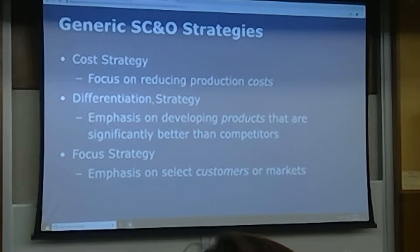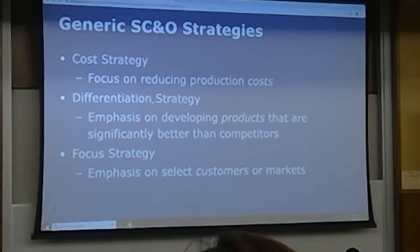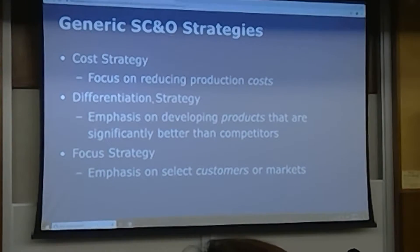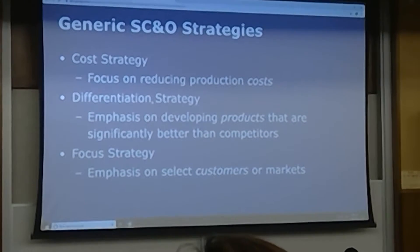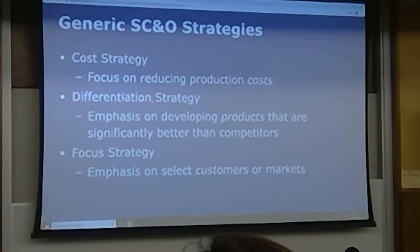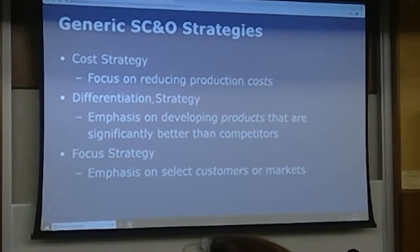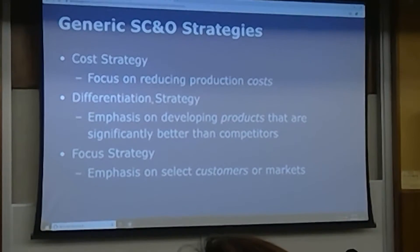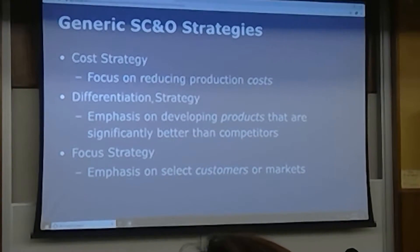Anyone want to give me an example of a cost strategy? Walmart — perfect. Differentiation strategy depends on just being better than the others — Apple, perfect. And a focus strategy? Home Depot. What kind of market or customer are they targeting? Contractors, maybe do-it-yourself.